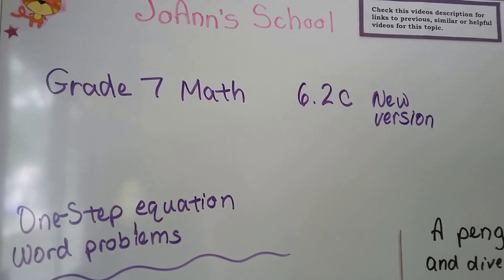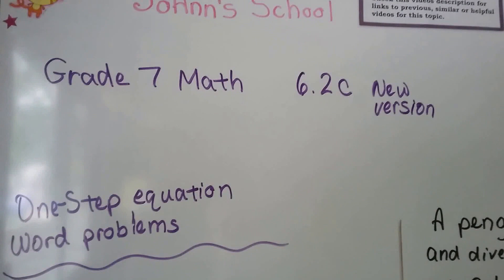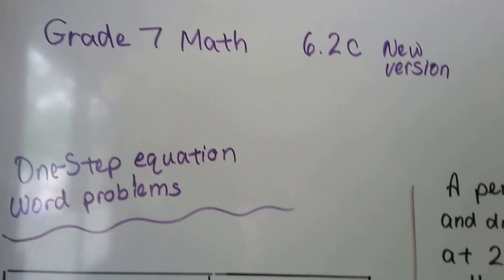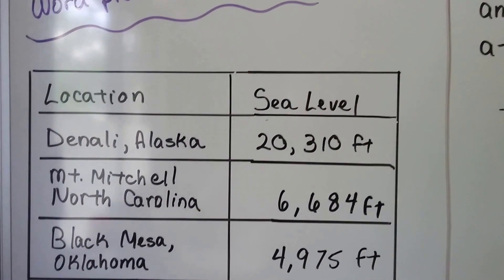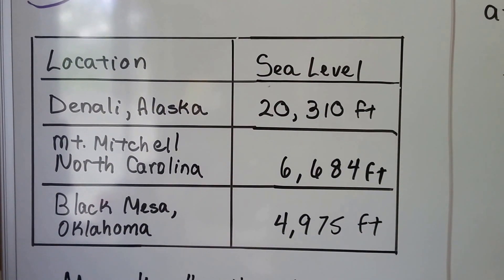This is a new version of Grade 7 Math 6.2c. We're going to talk about one-step equation word problems. There was a math error in the previous one and I fixed it.